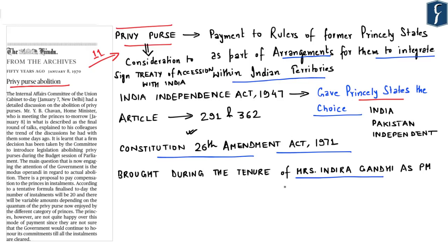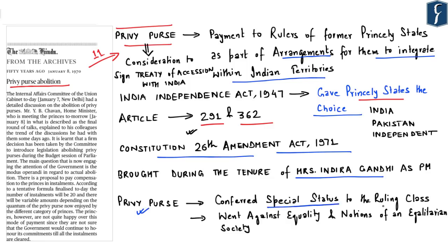This becomes an important aspect from your Prelims point of view — in 2019 a question was asked about the Ninth Schedule and who was Prime Minister. The Constitution 26th Amendment to abolish privy purse was initiated during the tenure of Mrs. Indira Gandhi as Prime Minister. The payments of privy purse were made under Article 291 and Article 362 of the Indian Constitution. The practice of privy purse was often questioned as a relic of the colonial past, conferring special status to the ruling class and going against the concept of equality and an egalitarian society.